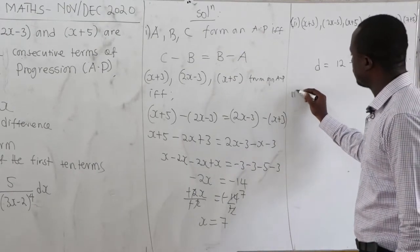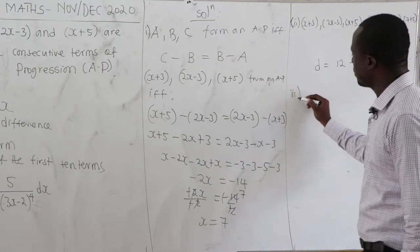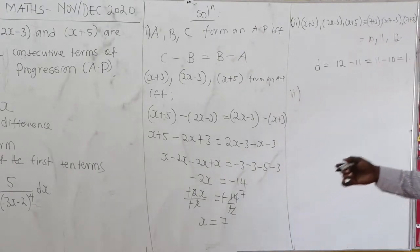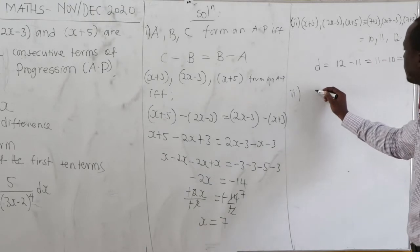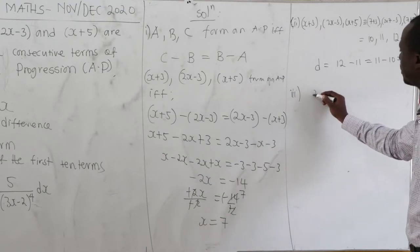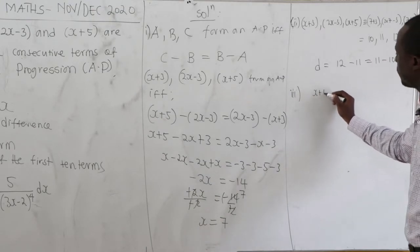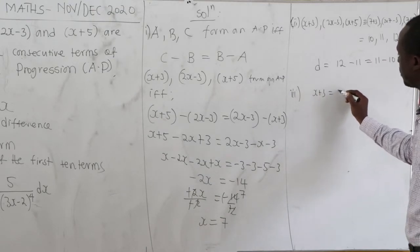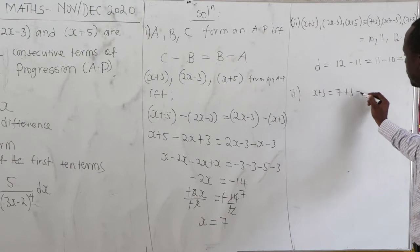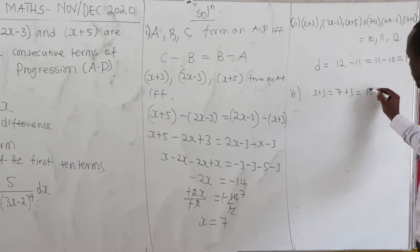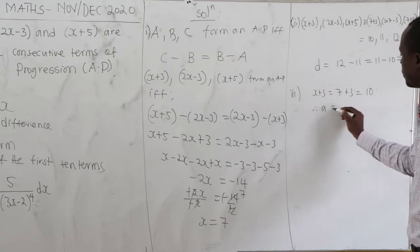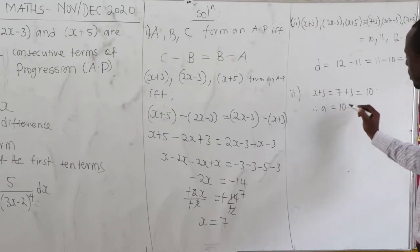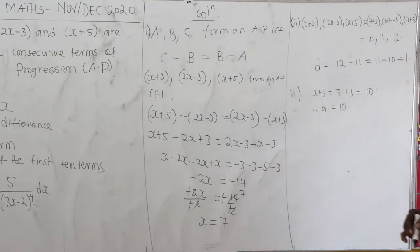The first term: x plus 3 equals 7 plus 3 equals 10. So our first term A is 10.